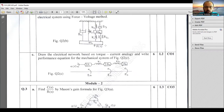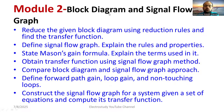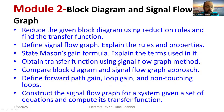Now for Module 2, which has two components: block diagram and signal flow graph. For block diagrams, study the 12 rules to reduce a block diagram. For signal flow graphs: define signal flow graph, state its rules and properties, and state and explain Mason's gain formula — that is a sure-shot question. Obtain the transfer function using the signal flow graph by solving with Mason's gain formula.